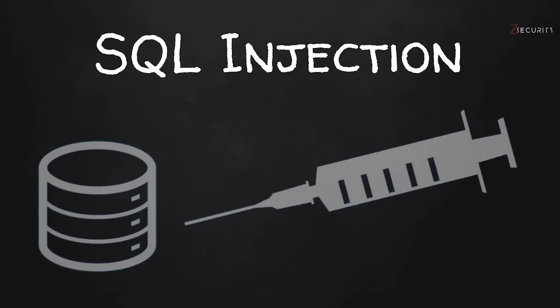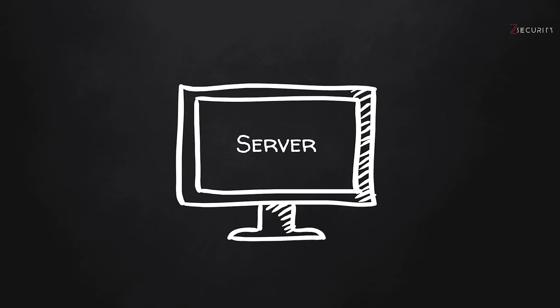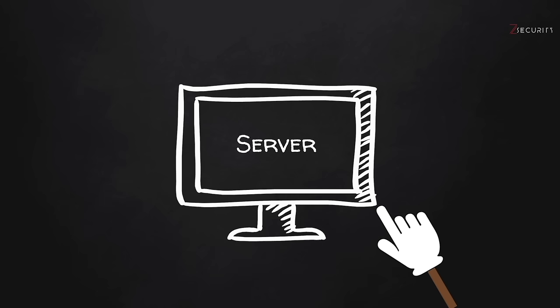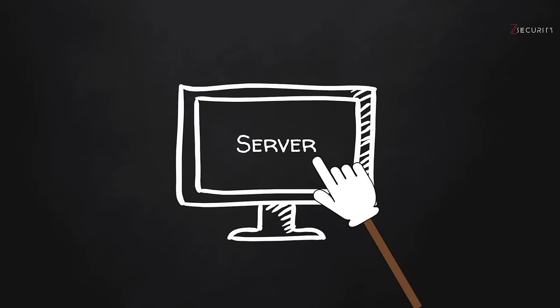SQL injections are vulnerabilities that can be found in web applications. But before we explain how to discover and exploit them, let's zoom out and remember what a website is. A website is basically just a web application installed on a server, and a server is simply just a computer. It could be any computer — even your personal computer — and when we say it's a server, it just has certain applications on it that allow it to act as a server.